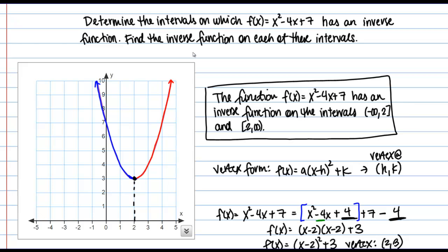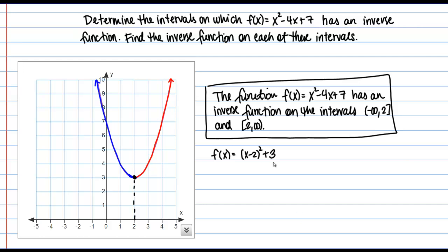The next part is to actually find the inverse function on each of these intervals. To find an inverse function, there's a prescribed set of steps. I'll work from the rewritten vertex form. Step one: write it as y = (x − 2)² + 3. Step two: switch x and y, giving x = (y − 2)² + 3. Then solve for y: subtract 3 from both sides to get x − 3 = (y − 2)².